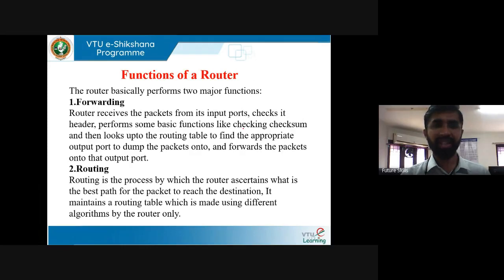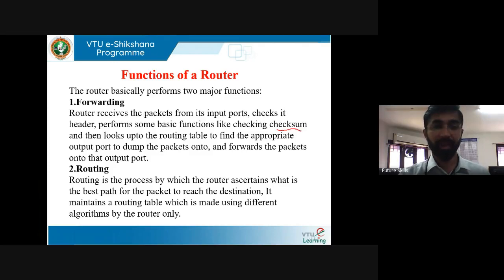Coming to the functions of a router. The router basically performs two major functions: forwarding and routing. The router receives the packet from the input ports, checks the header, performs basic functions like checking the checksum — which is used to detect errors — then looks up the routing table to find the appropriate output port, and forwards the packet onto that output port. This is the major function of router known as forwarding.